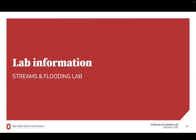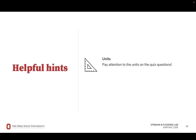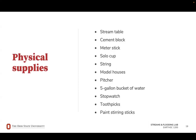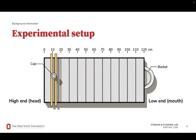Next, we'll discuss information you'll need to complete this lab. After handling lab supplies, particularly the stream table itself, wash your hands with soap and water. When lifting the stream table or the cement block, make sure you're using both hands and multiple table mates and/or the help of your TA. Make sure you keep track of your units and pay attention to the units on the quiz questions. Physical supplies for this lab include the stream table, cement block, meter stick, solo cup, string, model houses, pitcher, five-gallon bucket of water, stopwatch, toothpicks, and paint stirring sticks. The worksheets and procedure will be available for download in the instruction page in this week's CARMEN module. This figure shows the general setup of the experiment and will be on the screen for the majority of the lab.